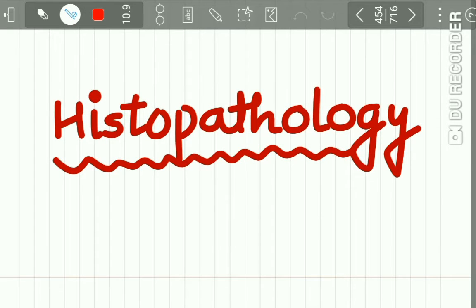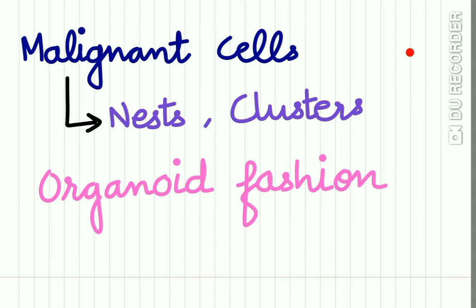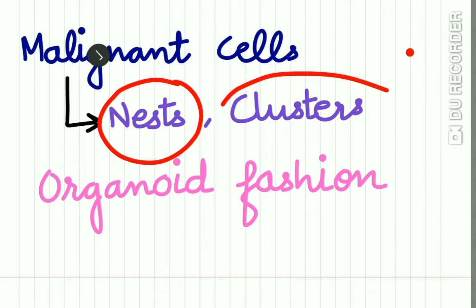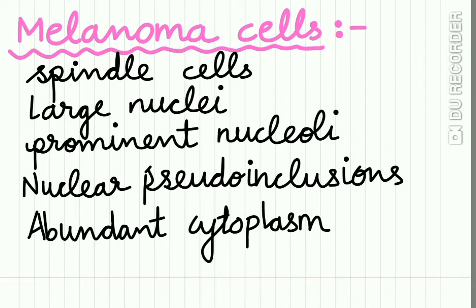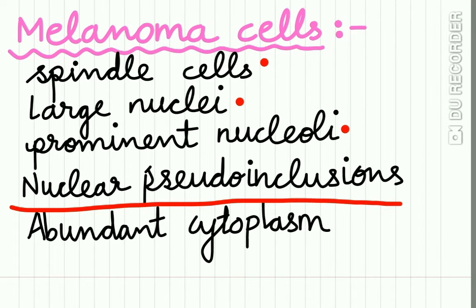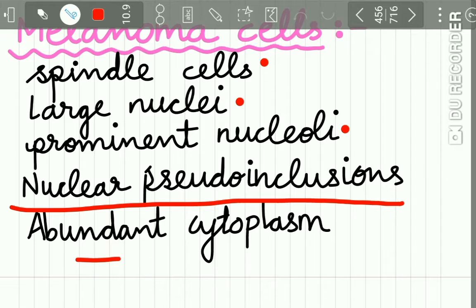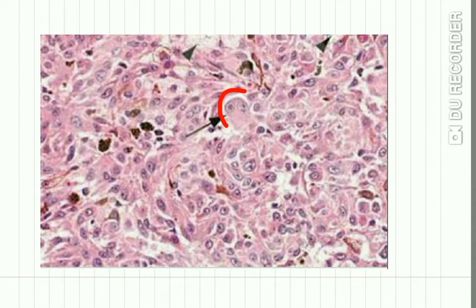Histopathology of malignant melanoma: the malignant cells appear in nests or clusters arranged in an organoid fashion. The melanoma cells are spindle-shaped with large nuclei and prominent nucleoli. Nuclear pseudo-inclusions are a common finding due to an irregular nuclear membrane. Melanoma cells also have abundant cytoplasm. Here you can see a typical melanoma cell showing large nuclei, prominent nucleoli, and abundant cytoplasm.